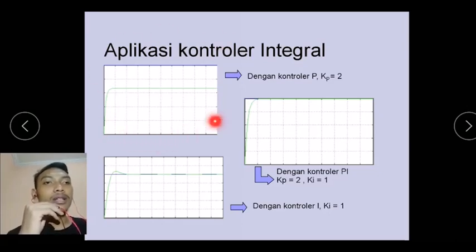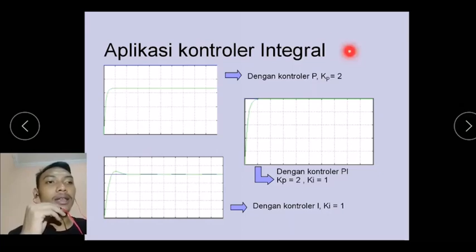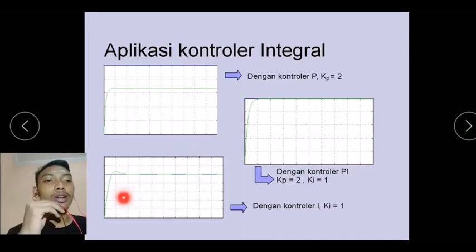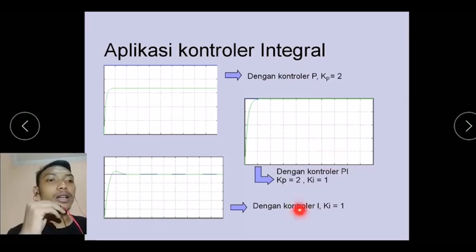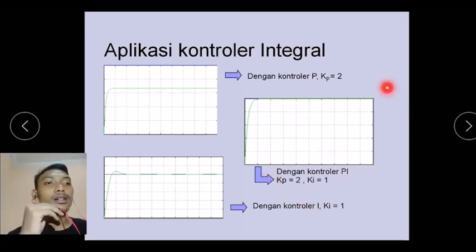Aplikasi controller integral: grafik yang pertama menggunakan controller P dengan nilai K_P=2. Untuk grafik kedua menggunakan controller I dengan nilai K_I=1. Dan dilihat ketika kita menggunakan controller PI dengan nilai K_P=2 dan nilai K_I=1, kita akan menghasilkan grafik yang lebih stabil daripada sebelumnya.